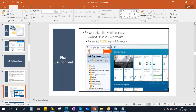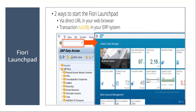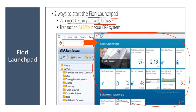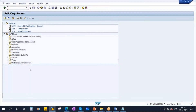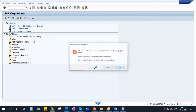How to log on to the Fiori launchpad: there are two ways. One is via a direct URL in your web browser — they give you a URL, you open your browser, enter that URL, and log in. Another method is to launch Fiori from your GUI using the transaction /nui2/fnp. In the command field, you enter this transaction and press Enter, then it will automatically launch Fiori. Let's see this in the system — I am in the traditional GUI, I'll put in the transaction slash n UI2 FNP and press Enter. It will launch Fiori.